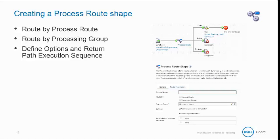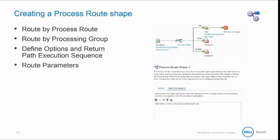The general settings tab also allows you to define options and the return path execution sequence. The route parameters tab is where you specify the parameter types and the values that are the basis for process routing. The parameter values that you specify are combined to become the route key in the process route component. Route keys are used to determine which subprocess to call.